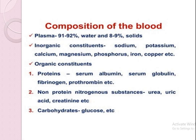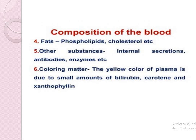The organic substances are proteins — for example, serum albumin, serum globulin, fibrinogen, and prothrombin. The non-protein nitrogenous substances are urea, uric acid, and creatinine. The carbohydrate substance present in the plasma is glucose. Fats are also present in the plasma — for example, phospholipids and cholesterol. Other substances like internal secretions, antibodies, and enzymes are also present in the plasma.